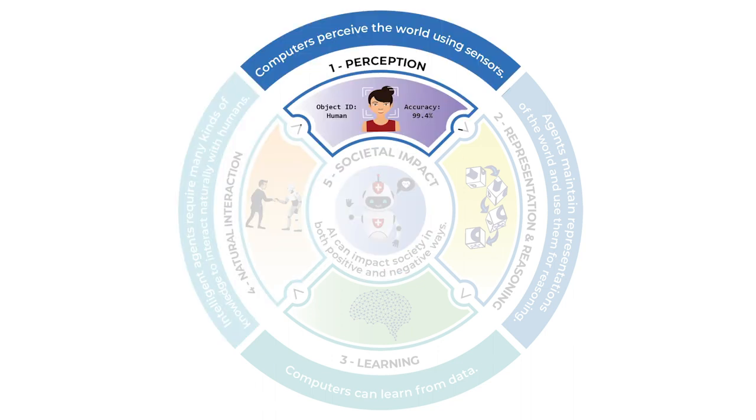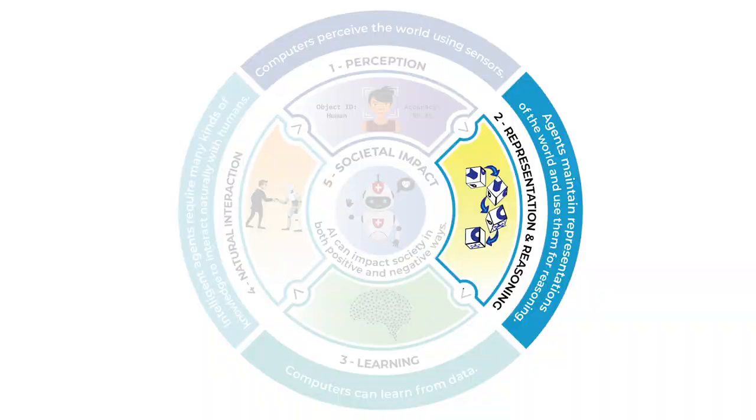Number one is perception. Perception is when a computer uses sensors to gather data and then extracts meaning from those signals.